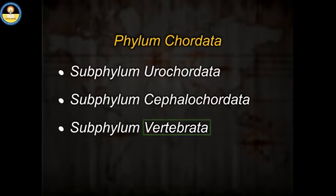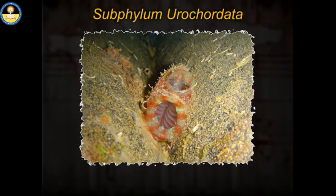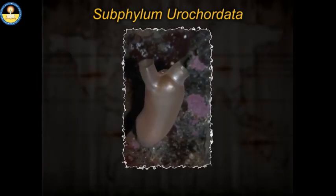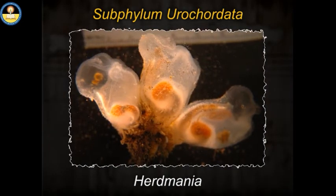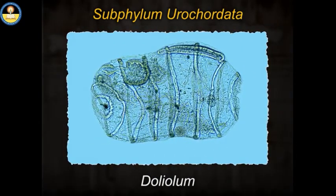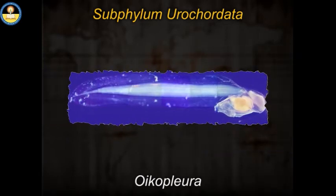Out of these, Vertebrata is the largest and consists of seven classes. Subphylum Urochordata. The urochordates, commonly called tunicates, are marine creatures which are mostly sessile as adults, although some are free living. The name tunicate is suggested by the usually tough, non-living tunic or test that surrounds the animal and contains cellulose. Some examples are Herdmania, Salpa, Doliolum, Pyrosoma, and Oikopleura.